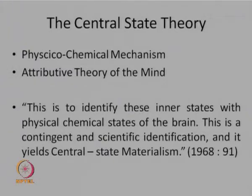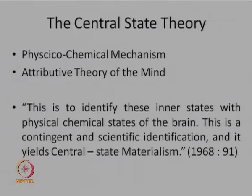Armstrong attributes some kind of quality or properties to the mind — to the physical chemical functions happening in the brain or the entire nervous system taken into account. Look at this quotation from Armstrong's book 'A Materialistic Theory of Mind,' published in 1968. He writes: to identify inner states with physico-chemical states of the brain is a contingent and scientific identification, and it yields central state materialism.